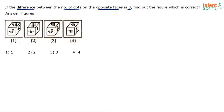Looking at the dice figures shown: the first die has faces showing 2, 4, and 3 visible. The second has 3, 2, and others. Counting the visible dots across each option to analyze which configuration satisfies the given condition. After counting, option figures show totals of 9, 5, 7 and other combinations across the visible faces.